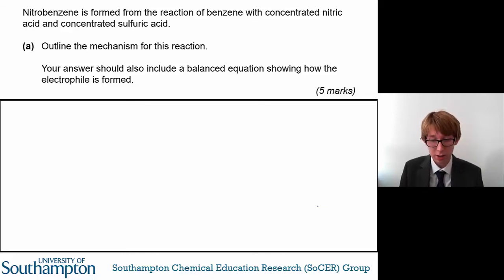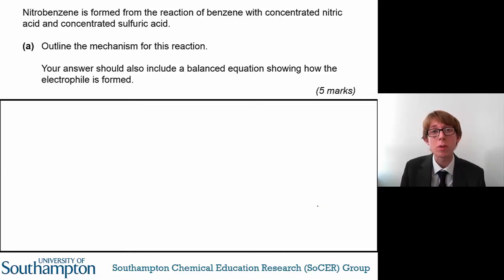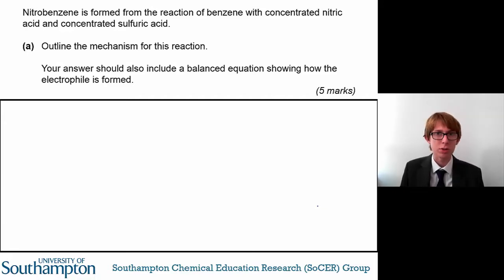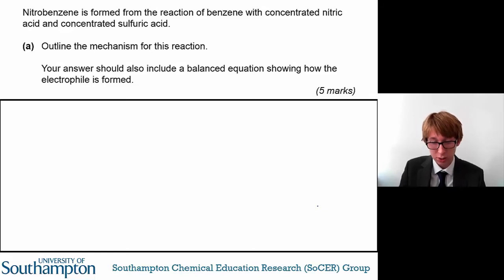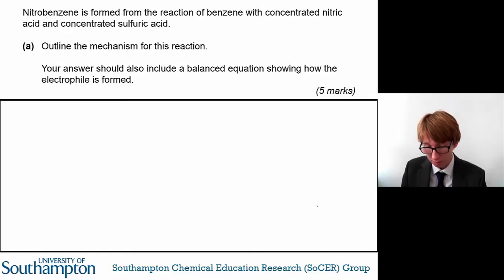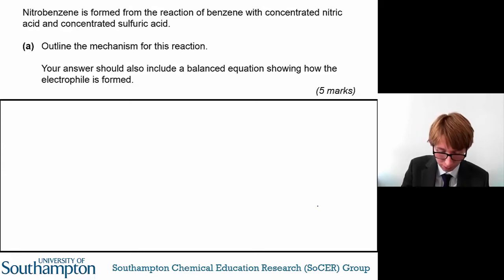This next question relates to nitrobenzene being formed from the reaction of benzene and concentrated nitric acid and concentrated sulfuric acid. This is another electrophilic substitution reaction and you are required to outline the mechanism for it. But as well as that, you also need to include a balanced equation showing how the electrophile is formed.